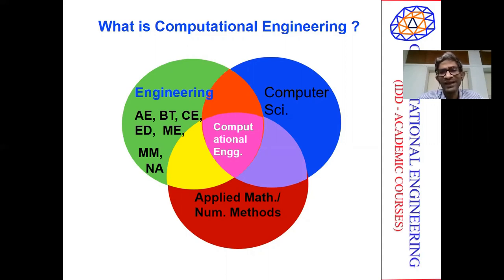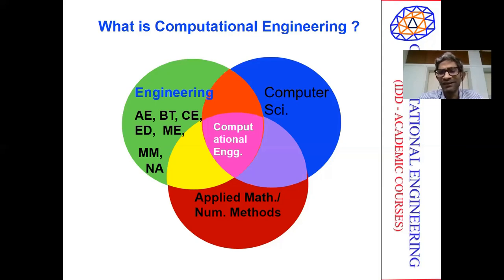And it's very important that we understand in a singular way the discipline-specific engineering aspects of our fields. As you know, there are three broad routes to doing engineering designs. One is to conduct experiments and come up with correlations. Another is to come up with analytical closed-form solutions for simplified model scenarios and perform engineering analysis and design.